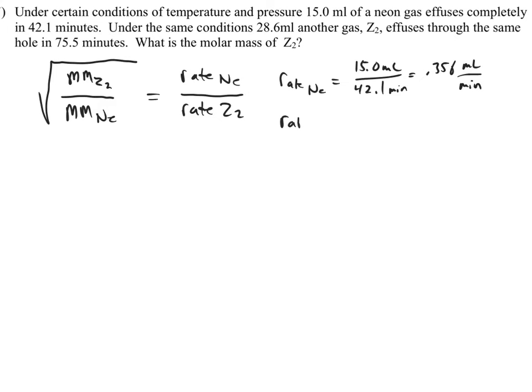Okay. And then the rate of Z2 is going to equal 28.6 milliliters, and that was in 75.5 minutes. So its rate is 0.378 milliliters per minute. So it's a little slower.